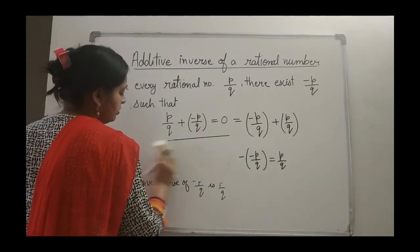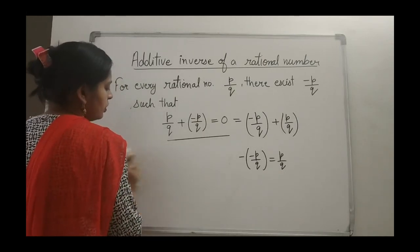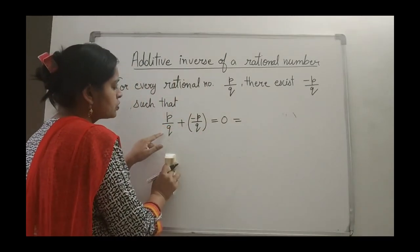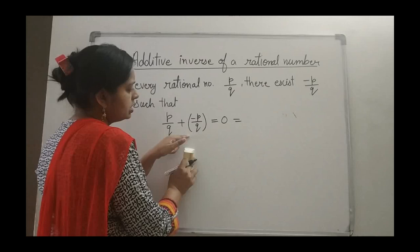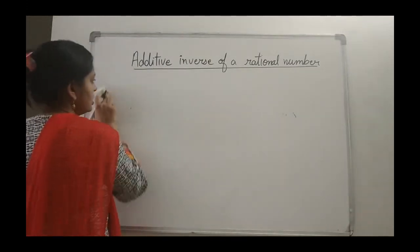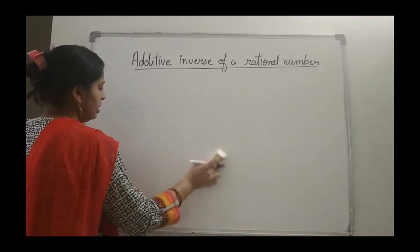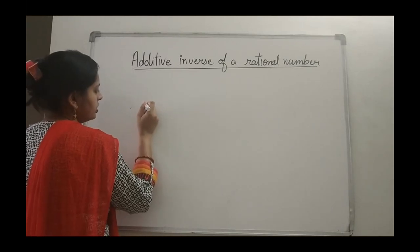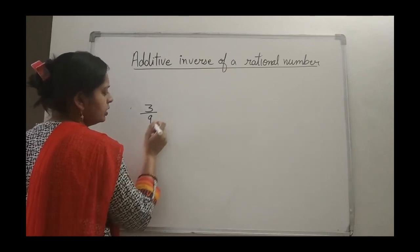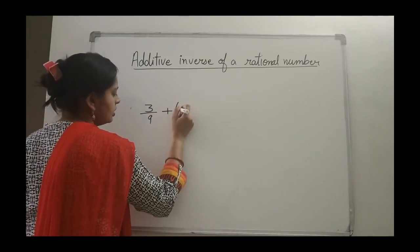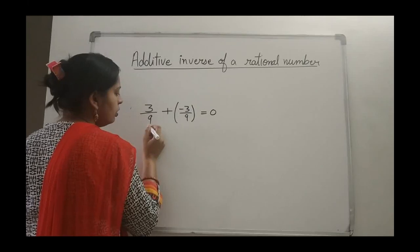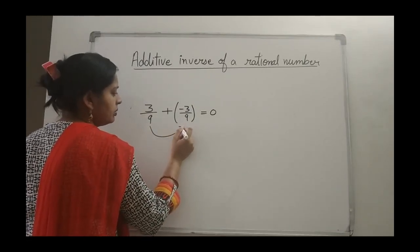Let us see through examples. What is the additive inverse? Additive inverse means what should be added to the rational number so that the result is 0. What should be added in P by Q to make the result 0 — that number is the additive inverse of the given rational number. For example, if the rational number given is 3 upon 9, then 3 by 9 plus minus 3 by 9 equals 0. So the additive inverse of 3 by 9 is minus 3 by 9.